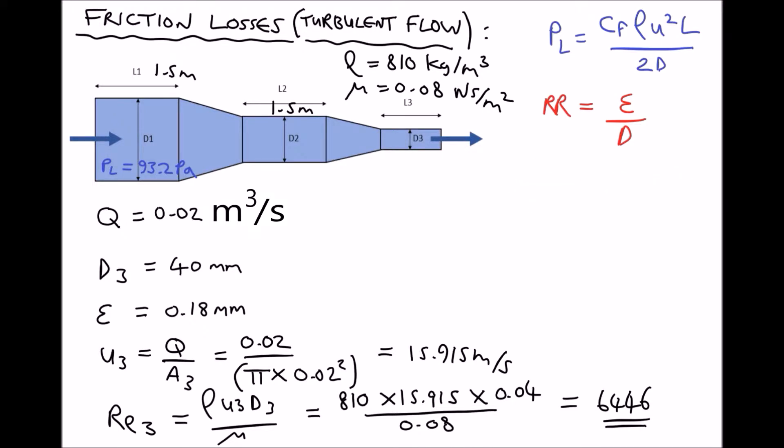So because relative roughness is a ratio, if we're going to use our ε value in millimeters, then we must use our diameter in millimeters. The alternative would be to convert both to meters, but we would arrive at exactly the same answer. So therefore, because ε is given in millimeters, and our diameter is also given in millimeters, it makes sense to use that as our unit. Therefore, the relative roughness in this case equals 4.5 times 10 to the minus 3. And relative roughness doesn't carry any units.